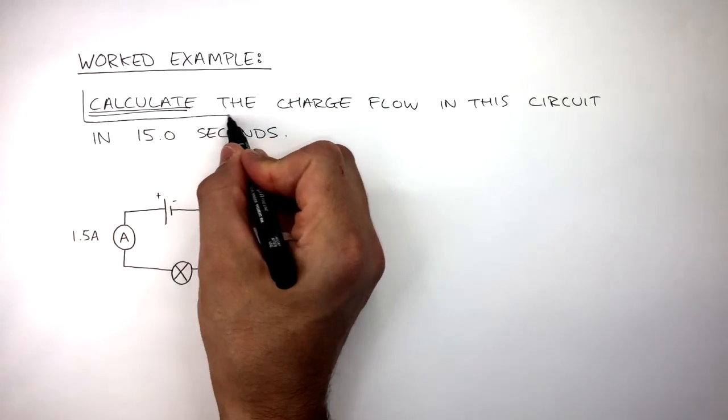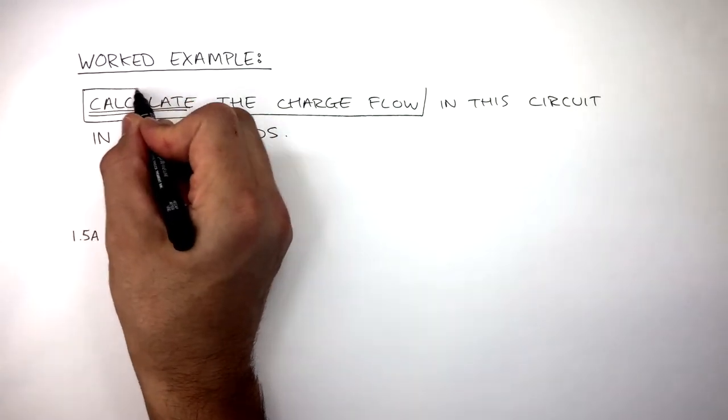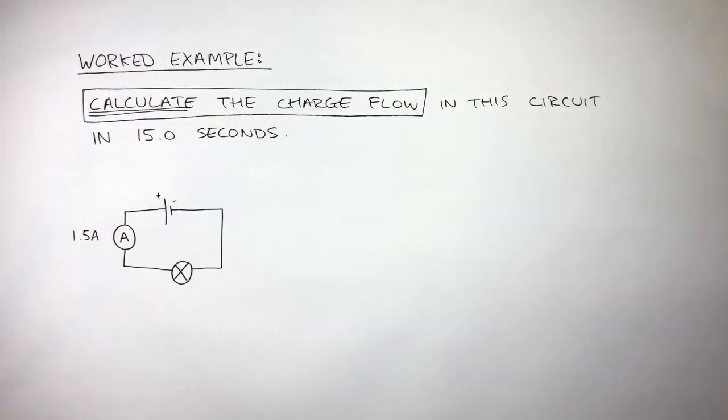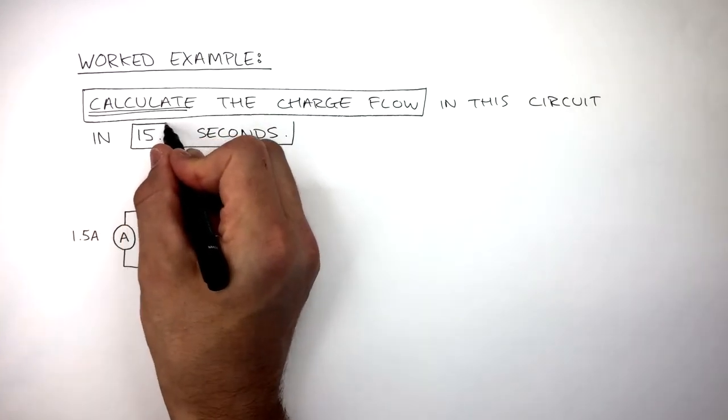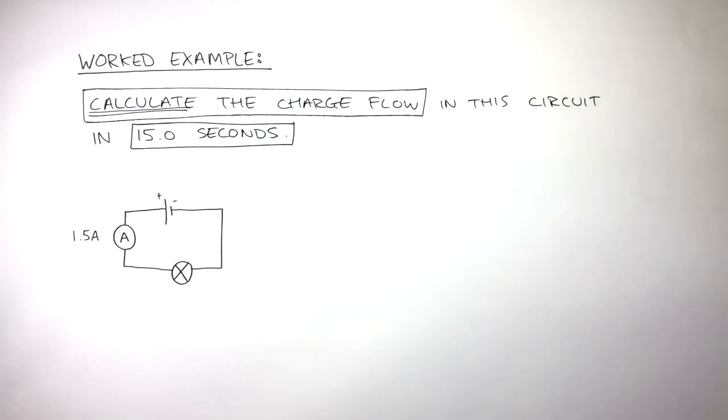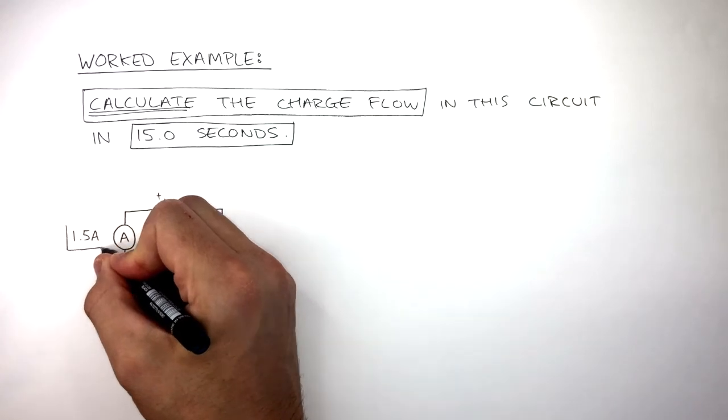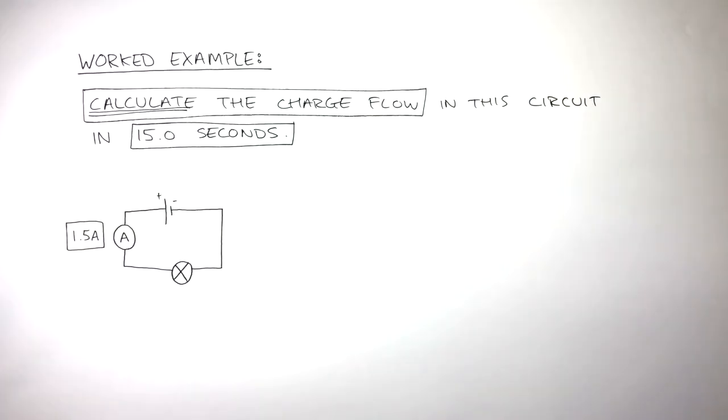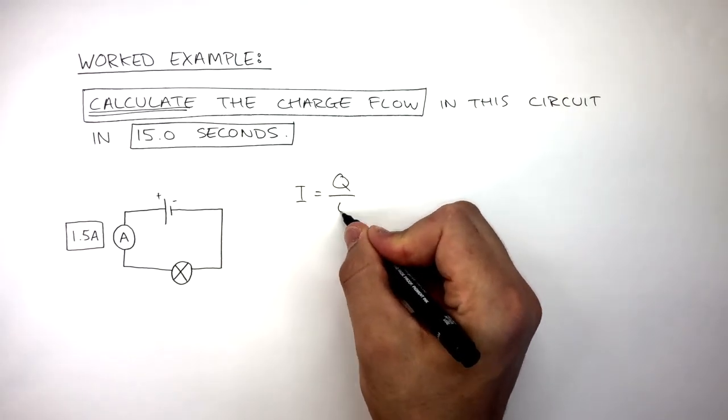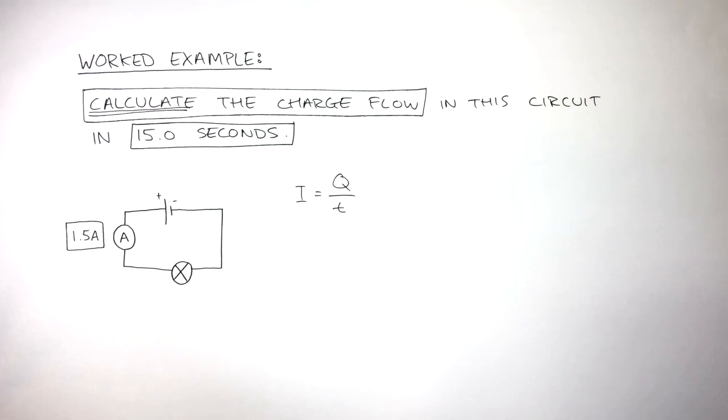The question is asking us to calculate the charge flow, so we draw a box around this so we know what we're calculating. We've been told the time is 15 seconds, and the ammeter reading, so the current, is 1.5 Amps.